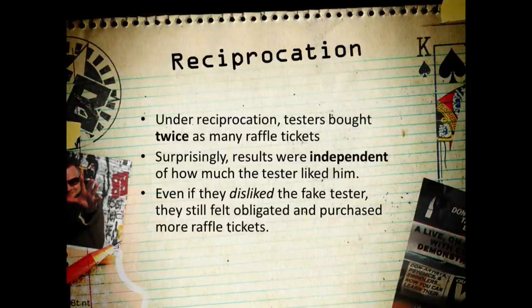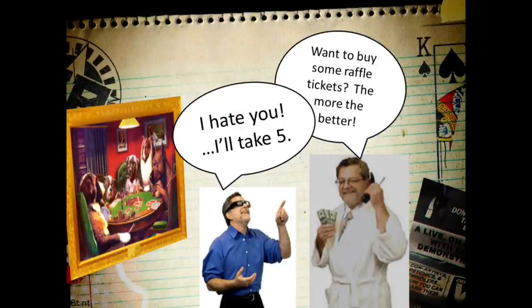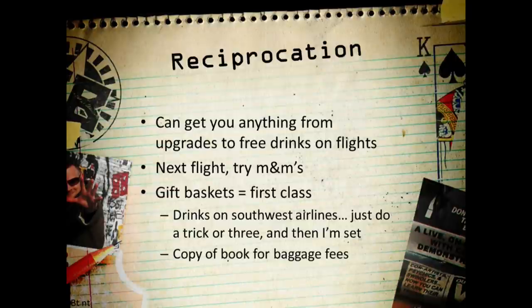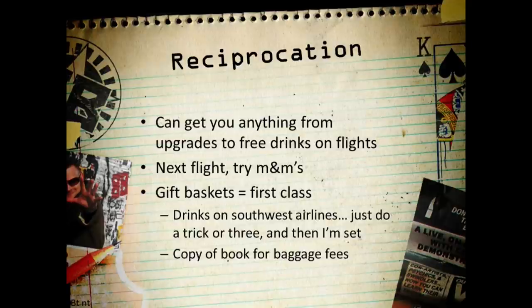You might say: well, maybe he just liked the guy for buying him a Coke. Turns out that in exit surveys, even if people actively disliked the fake tester they still bought twice as many tickets — so these are fixed action patterns. The Hare Krishnas have done a fantastic job with this — they give away gifts like the Bhagavad Gita or flowers and then ask for something in return. You can take advantage of this too: keep a bag full of M&Ms and whenever you run into someone just say 'Hey, you're working really hard, you could use a snack.' Costs you 35 cents, yet the perception of a thoughtful gesture could benefit you in the way of a first-class upgrade.